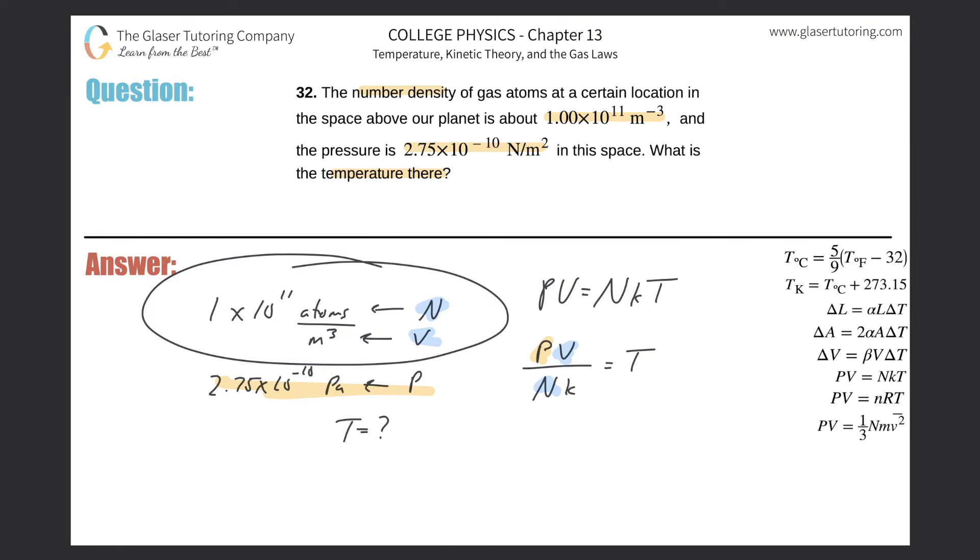I'm going to plug this value in on the denominator and then I should be able to solve. All right, it's actually fairly straightforward. So the pressure here is going to be 2.75×10^-10, then divided now by - and this is the whole V over N part - all right, 1×10^11, and then multiplied by this Boltzmann constant of 1.38×10^-23.